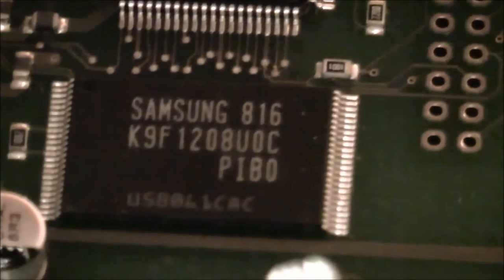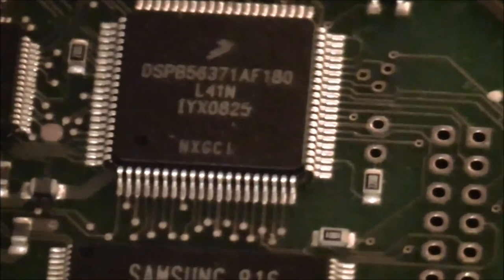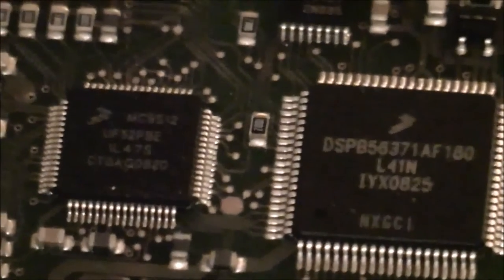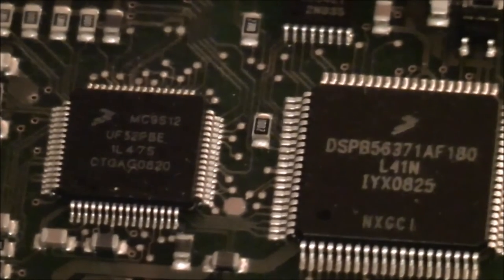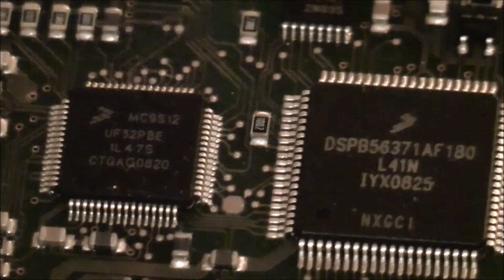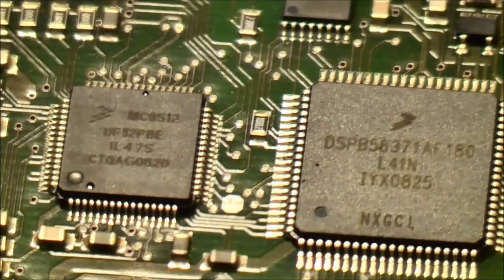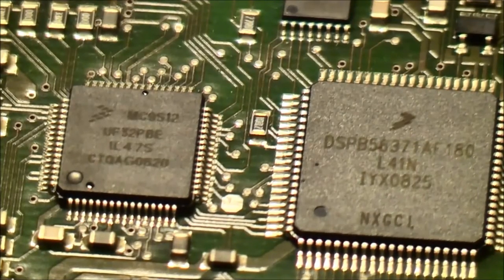It's a Samsung K9 F1208 UOB with 64 MB of memory. And above you see one of the two main processors. Here you see both of them. The left one is a Freescale MC9 S12 for the USB and as a CPU. And the right one is a Freescale DSP-56371 and it's a 24-bit DSP digital sound processor.